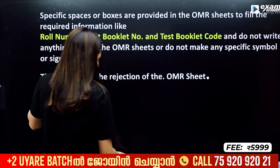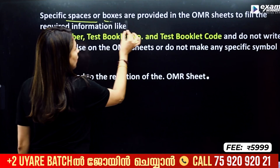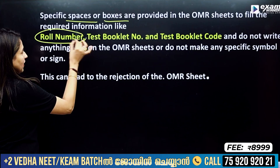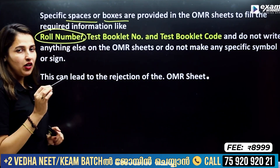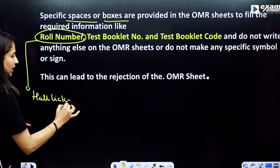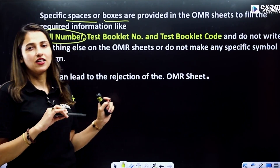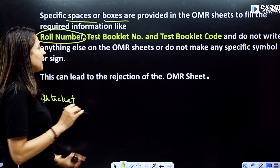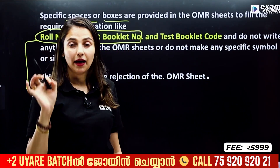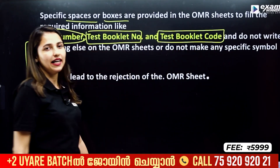You need to fill in the OMR sheet in the specific spaces provided. The first box to fill is your roll number. This roll number is on your hall ticket. If you have your hall ticket, you can print it. It contains a 10-digit roll number. The next item is the test booklet number — fill in the question paper booklet number and its code correctly.